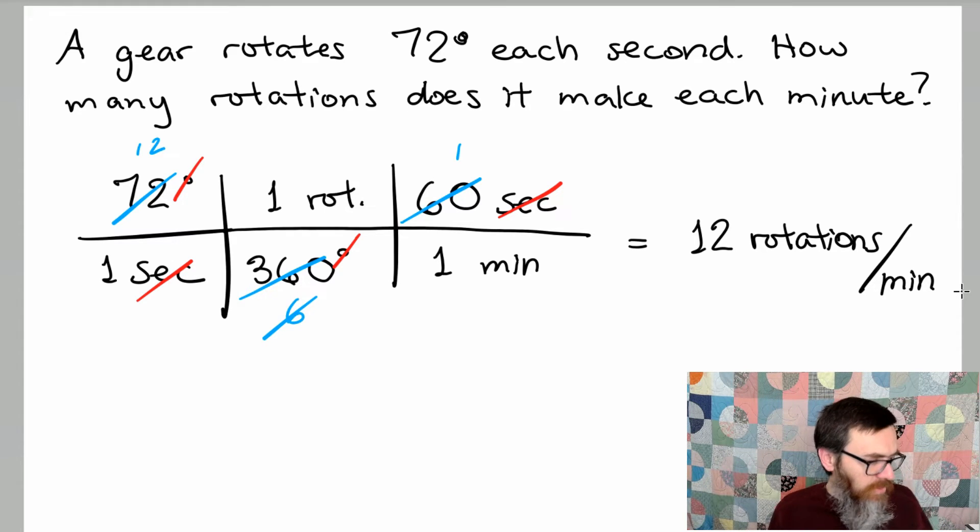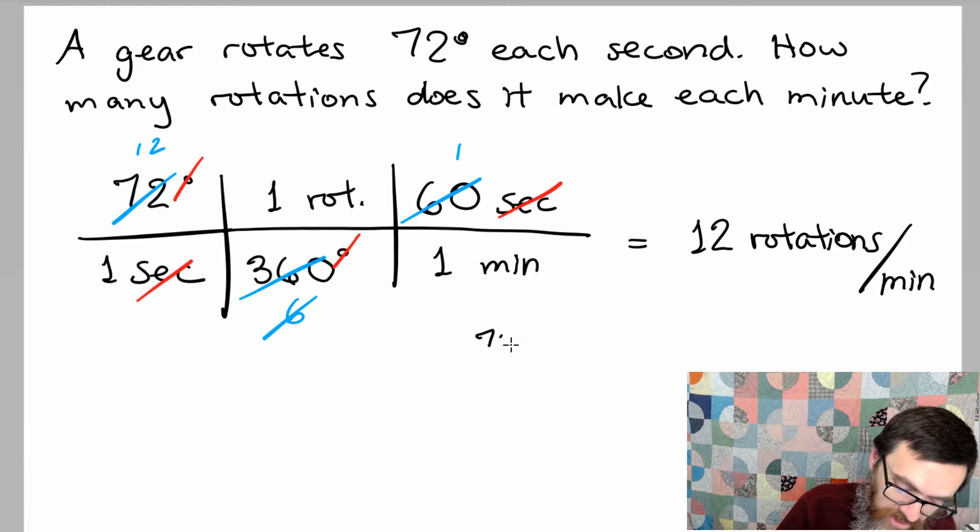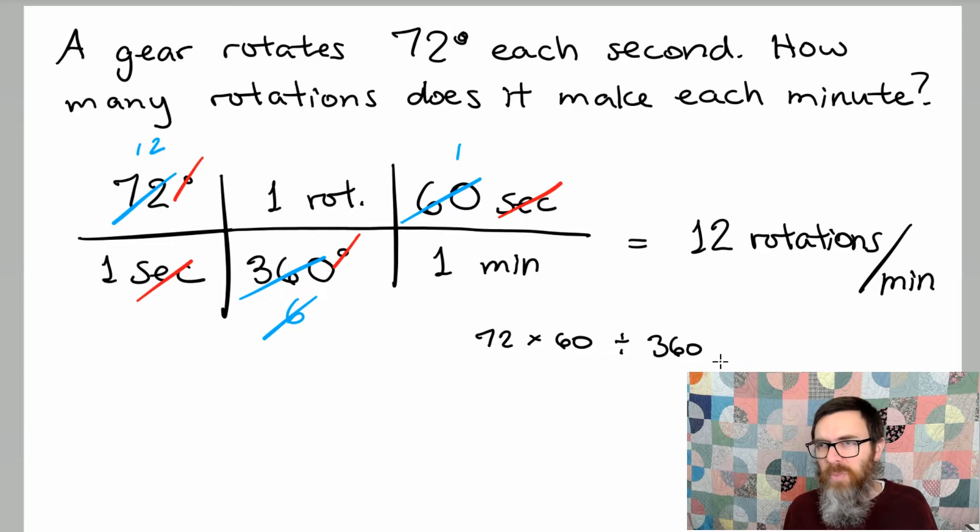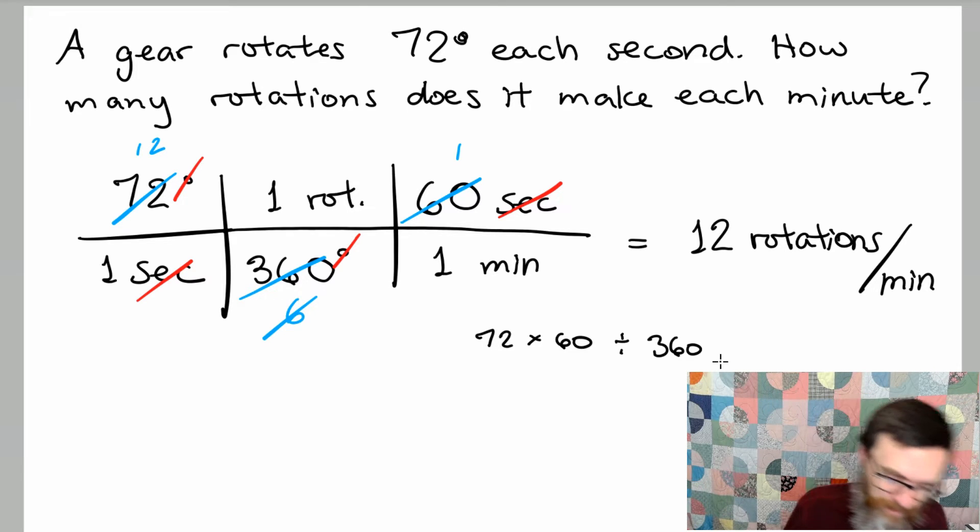Now if you don't believe what I have here, you can always go to the calculator. And this is what I would type in. I've got 72 times 60 and I've got divided by 360. I don't need to worry about the ones because multiplying or dividing by one doesn't do anything. So 72 times 60 divided by 360. I get 12. What do you know?